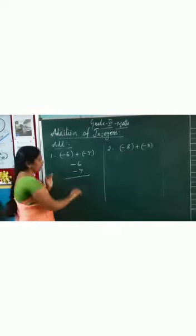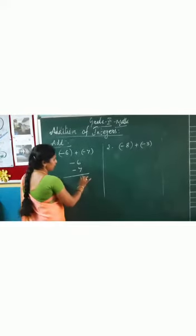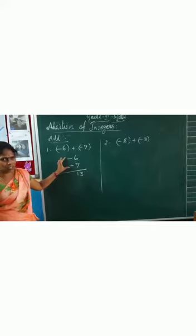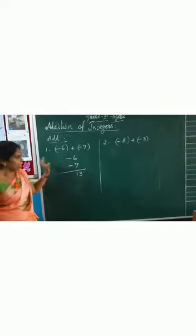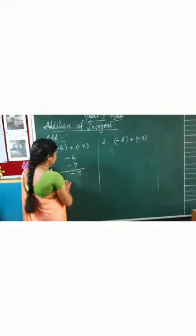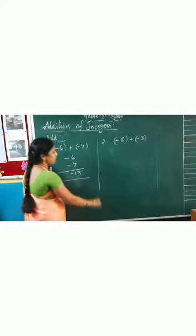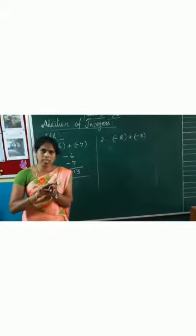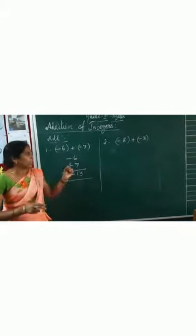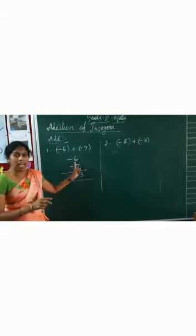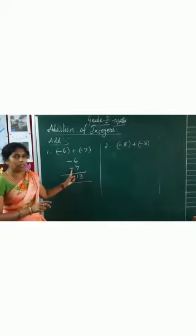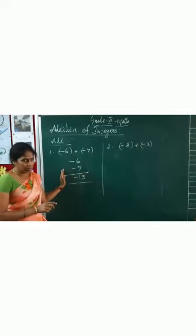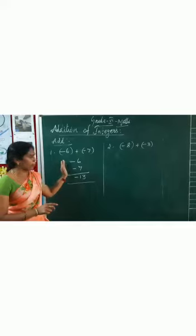That means you have to add the numbers: 6 plus 7, that is 13. After adding the numbers, whatever symbol is in front of the numbers, that is the one you choose. So your answer is minus 13. If two numbers have the same symbol, you add the numbers and choose the symbol that is in front — that symbol. This is one type of addition.